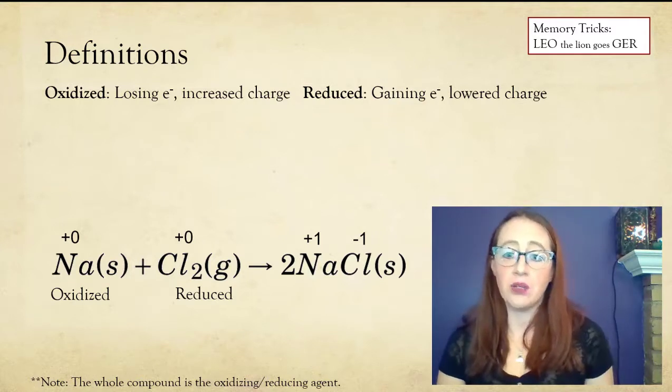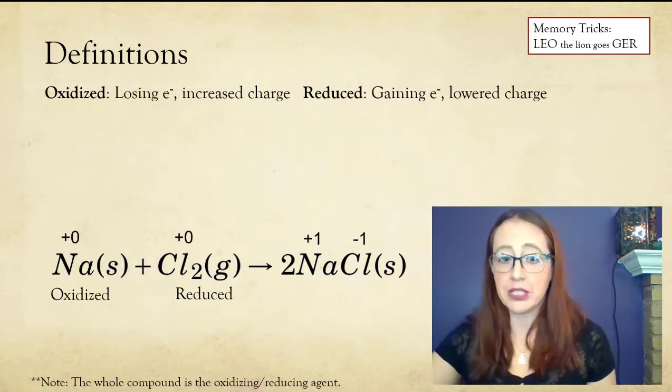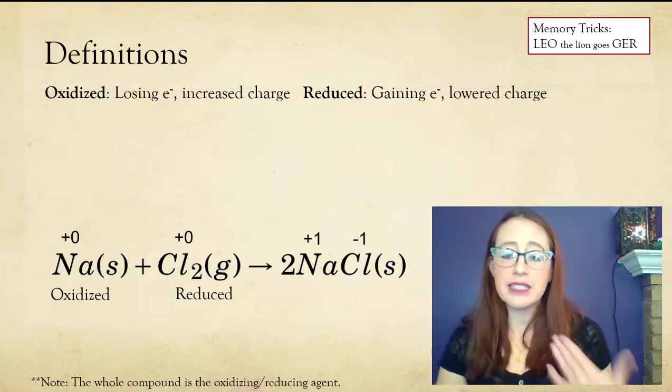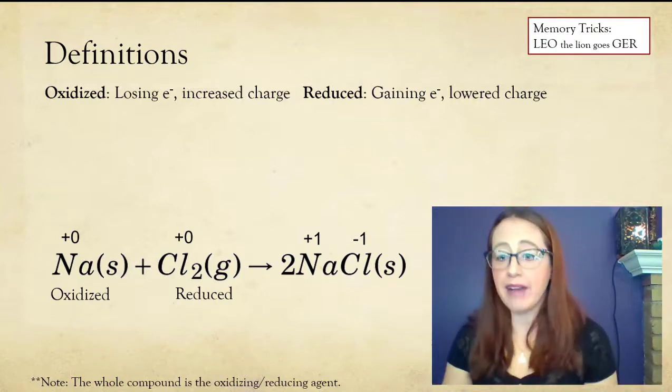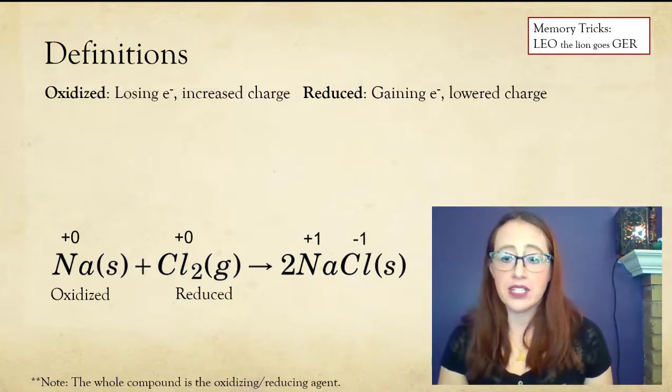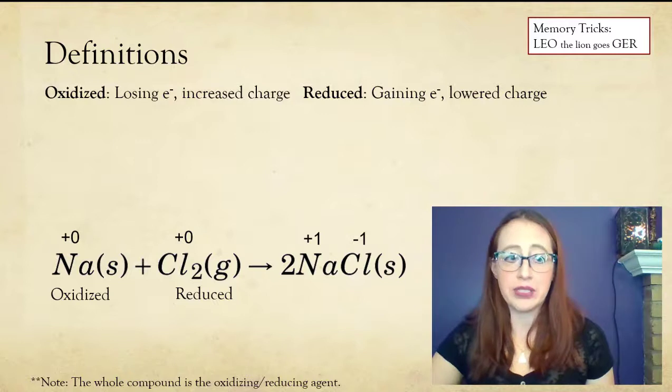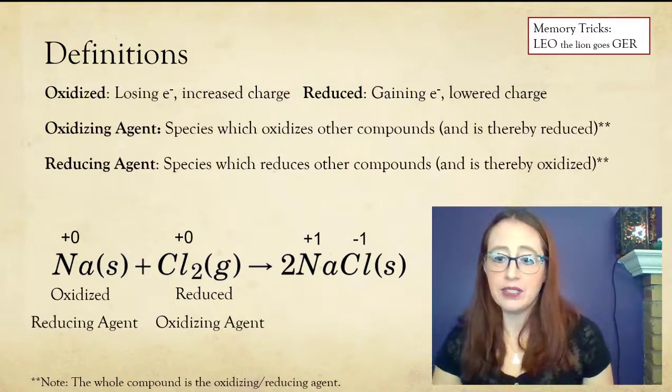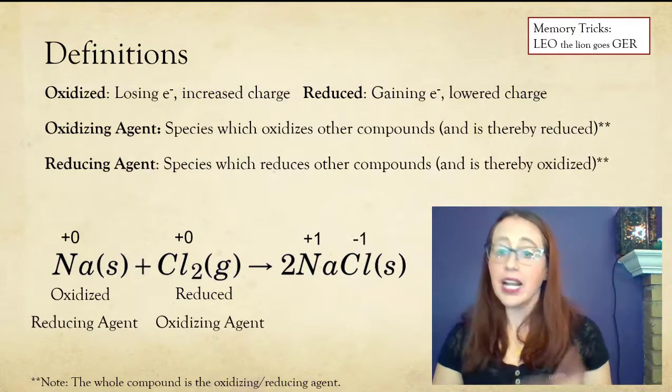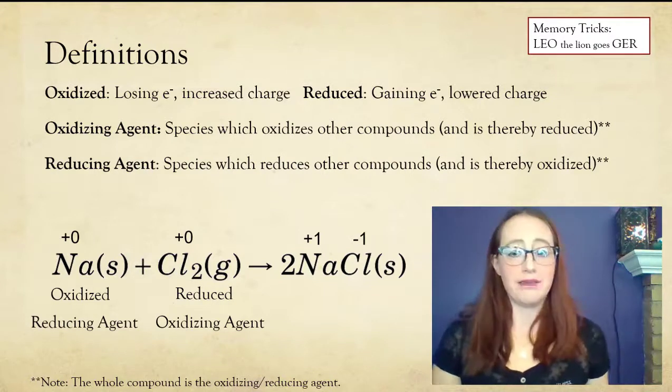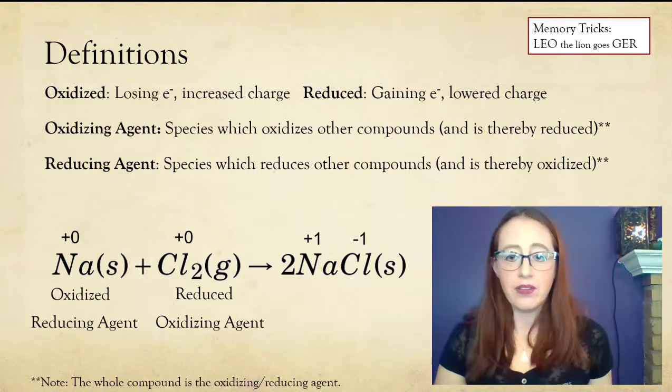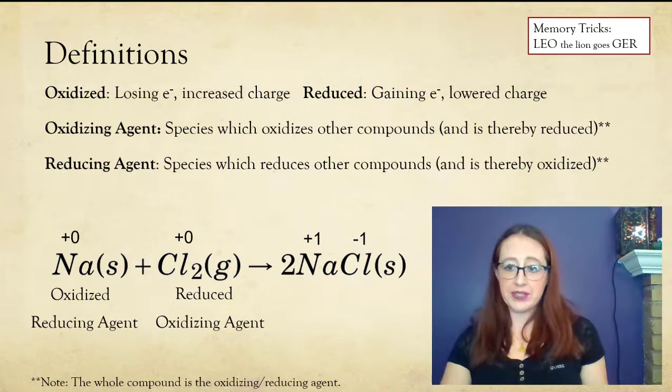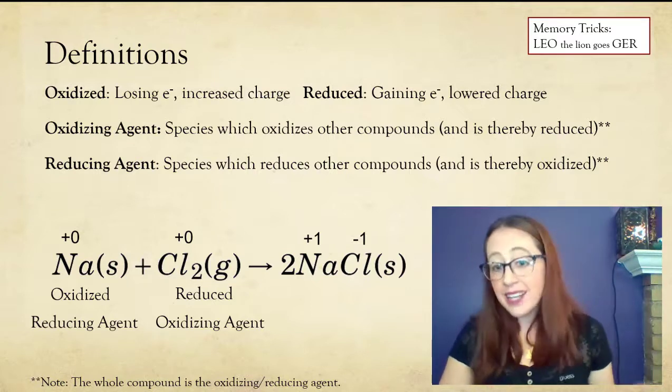Often in chemistry, our goal is to reduce or oxidize something in particular, and we want to discuss what compound will do that for us. In these discussions, we talk about an oxidizing or reducing agent. The oxidizing agent oxidizes the other species, thereby being reduced itself. And similarly, the reducing agent reduces the other species, thereby being oxidized itself.